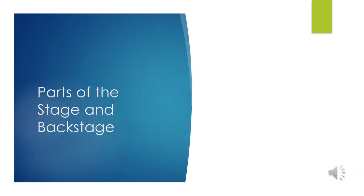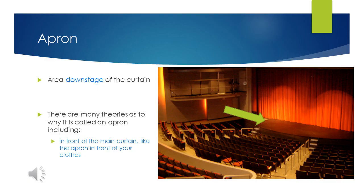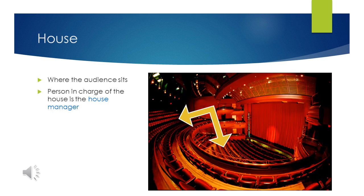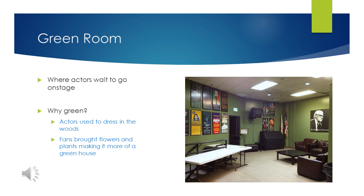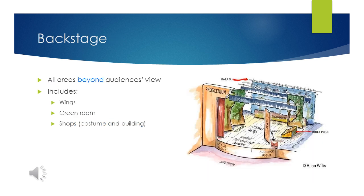Moving on to parts of the stage and backstage. We start with the apron — this is the area downstage of the curtain. There are many theories as to why it is called the apron, including my favorite: it is in front of the main curtain like an apron is in front of your clothing. Then there is the house — this is where the audience sits. The person in charge of the house and the ushers is called the house manager. Next is the green room, where the actors wait to go on stage. Our green room is our classroom, but in many theaters they have green rooms that act as lounges for the cast and crew. Why the color green? There are many theories, including that actors used to dress in the woods when performances were held outside, and another theory that fans would bring flowers and plants, making it more of a greenhouse than a green room. The term backstage is a general term for all areas beyond the audience's view, including wings, green room, and the shops — both costume and building.